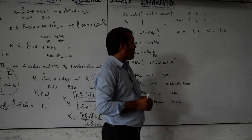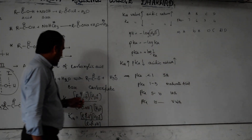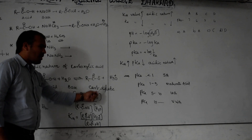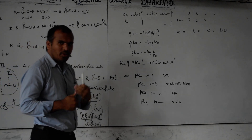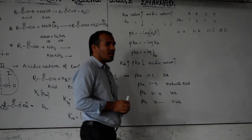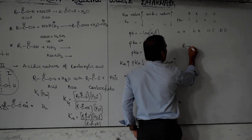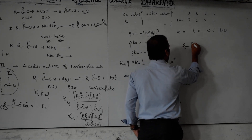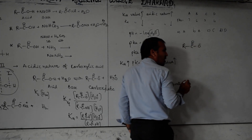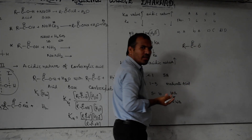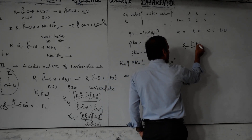Now, the carboxylate anion R-C(=O)-O⁻ undergoes resonance, which contributes to its stability. The negative charge is delocalized between the two oxygen atoms through resonance. This resonance stabilization makes the carboxylate anion more stable, which in turn means the carboxylic acid is a stronger acid — this is why we need to consider resonance when assessing acid strength.